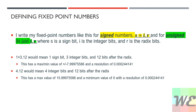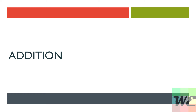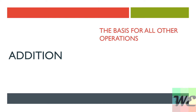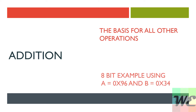4 dot 12 would mean 4 integer bits and 12 bits after the radix. This has a max value of 15.9975586, a minimum value of 0, and a resolution of 0.00244141. Now we're going to be going over addition, which is the basis for all of our operations, along with 1's complement, which gives us 2's complement and allows for everything else.